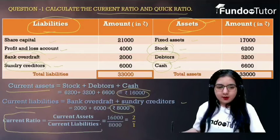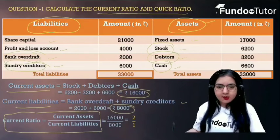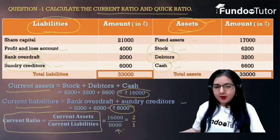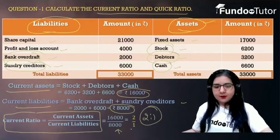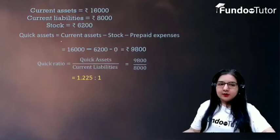Now we will apply the formula to calculate the current ratio: current ratio is equal to current assets divided by current liabilities, which is 16,000 divided by 8,000, giving us 2 is to 1. So current ratio is 2:1.